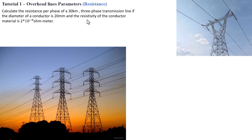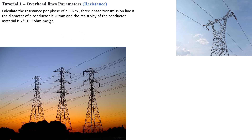First thing first, before you tackle this type of problem, you need to understand the problem statement. The problem statement states that we need to calculate the resistance per phase of a 30-kilometer three-phase transmission line, if the diameter of a conductor is 20 millimeters and the resistivity of the conductor material is 2 to the power negative 8 ohm meter. If you are sitting in an exam, you will most likely be given a formula sheet, but if you do not know what parameters are involved, you won't know what the correct formula to pick is. It is for that simple reason you need to understand the problem statement.